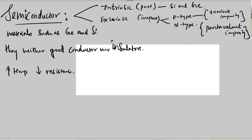P-type, you add trivalent impurity, example aluminum. N-type, you add pentavalent impurity, example phosphorus.